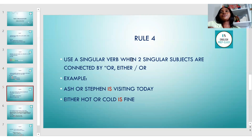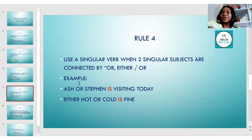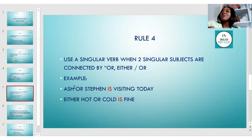Rule number four: use a singular verb when two singular subjects are connected by OR — or when you use either/or. For example, 'Ash or Steven is visiting today' — because OR is used, they are not a plural subject but individual singular subjects, so we use the singular verb 'is.' If I had used AND, I would use a different verb. 'Either hot or cold is fine' — when using 'either/or,' remember to use a singular verb.